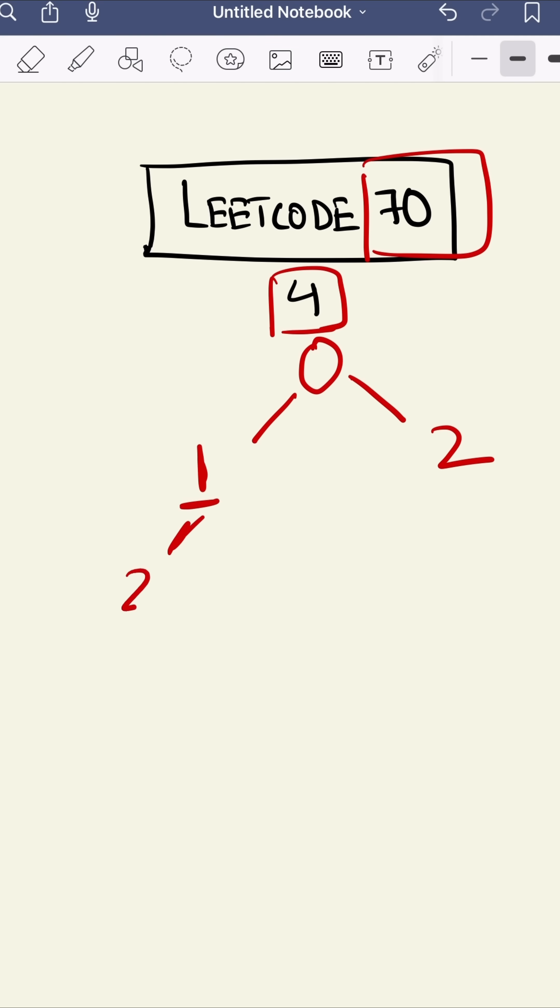From here on out, we can go one step to two or two steps to three. Similarly, from here we can go one step to three or two steps to four. We got to the top here. We don't need anything further.